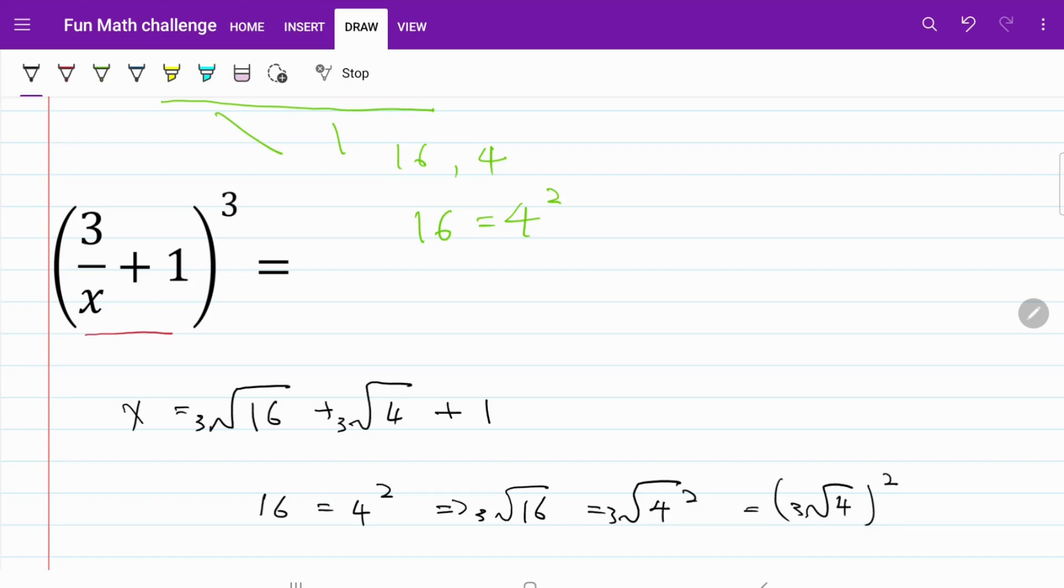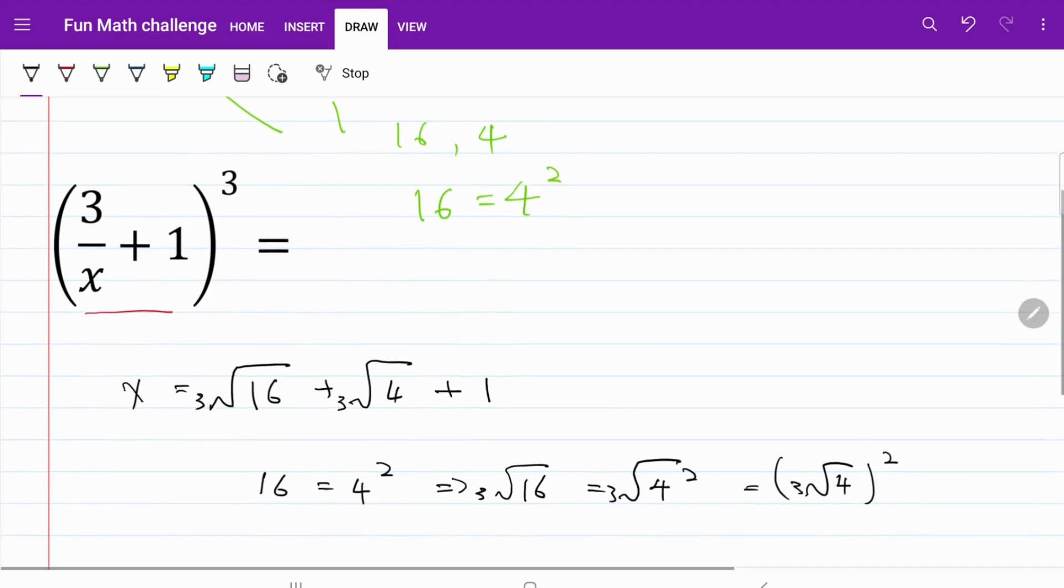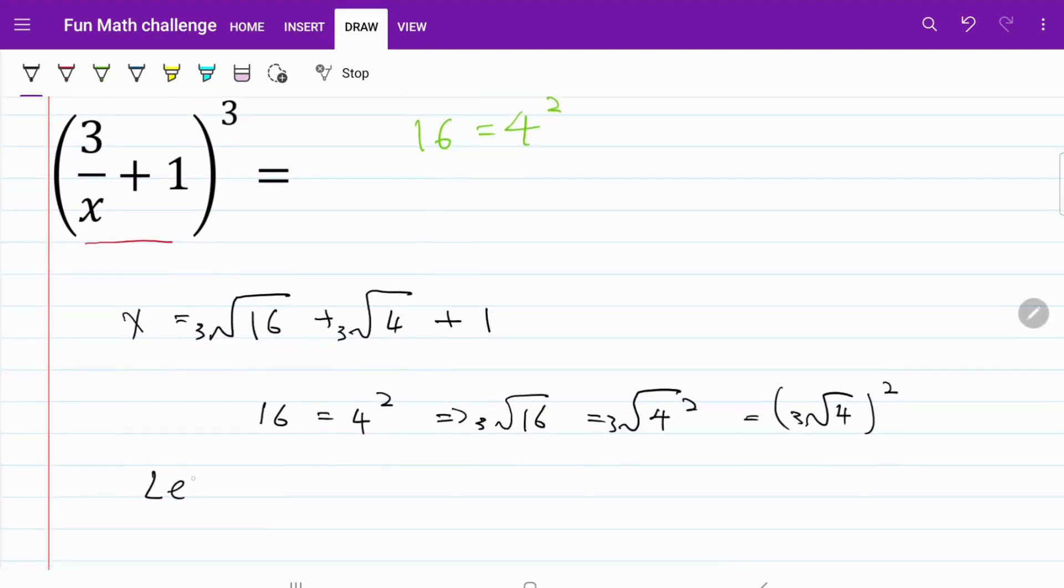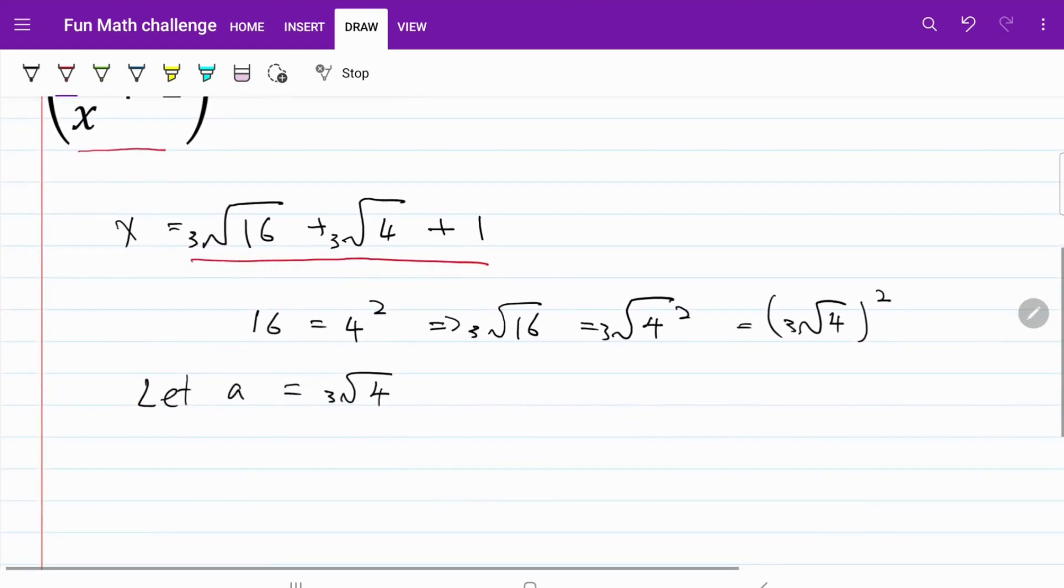Let's make use of this to do our substitution. I'm going to let a equal to the cube root of 4. If I do that, then I can rewrite this in terms of a. So now what I have is x is equal to a squared plus a plus 1. Let's see what we can do with this.